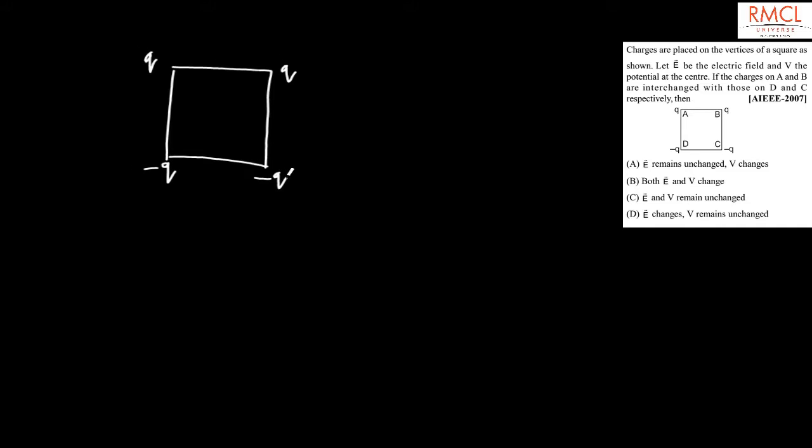A question from AIEEE 2007: charges are placed on the vertices of a square. At each vertex there is a charge — Q, Q, -Q, and -Q at vertices A, B, C, and D respectively. Let E be the electric field and V the potential at the center.